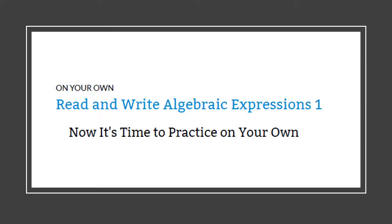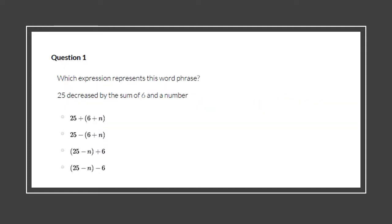Hey guys, it's Miss Sebastian and we're going to look at reading and writing algebraic expressions — this is Part 1. Which expression represents the word phrase? You are just going to read what the problem says and write it out. This one says '25 decreased by...' — if the money in my pocket was decreased, say I had five dollars and it was decreased by one, I would subtract. So 'decreased' means subtract.